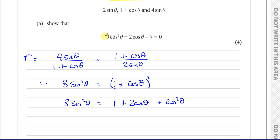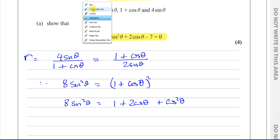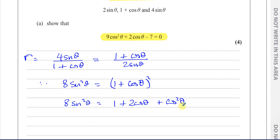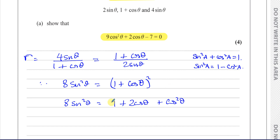What we have to show only contains cos²θ and cos θ — no sin θ or sin²θ. So I want everything in terms of cos θ. Using the identity sin²θ + cos²θ = 1, we get sin²θ = 1 − cos²θ. I can replace sin²θ with 1 − cos²θ.